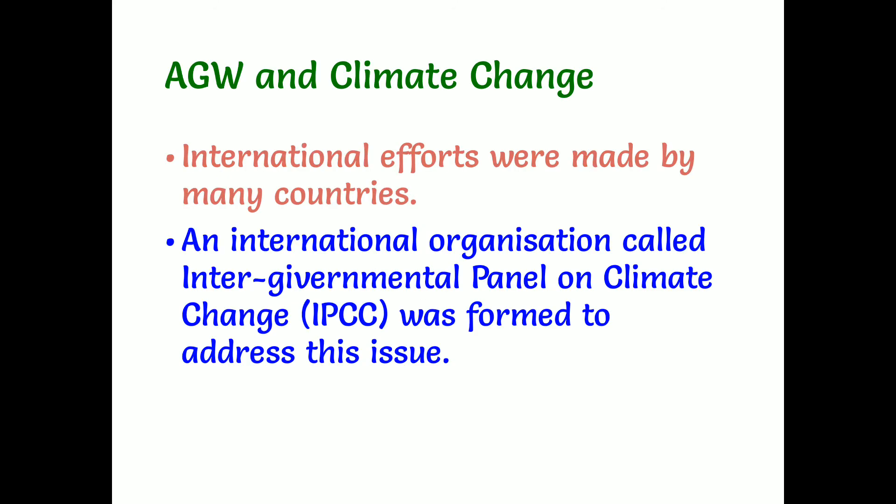AGW is causing many changes in the distribution of heat in the earth system — even oceanic circulations and climatic conditions around the world are affected. International efforts were made by many countries to control AGW, and an international organization called the Intergovernmental Panel on Climate Change (IPCC) was formed to address this issue. Discussions on preventing global warming took place in Warsaw, the capital of Poland, in 2013.